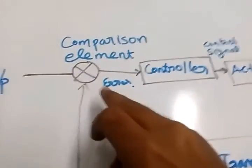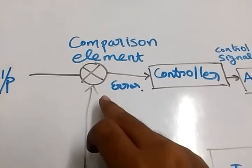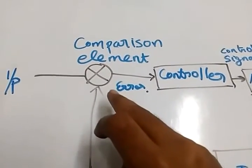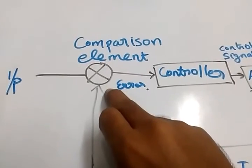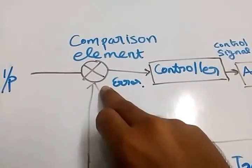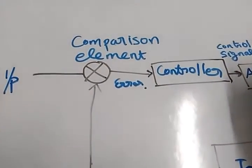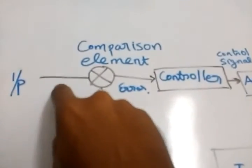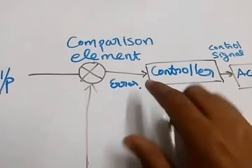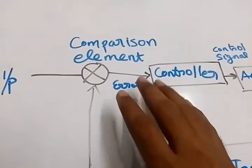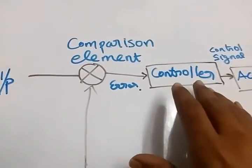So here the job is to do this comparison element. This comparison element finds the difference between the actual arm position and the required arm position given in the input. So now after comparison, this error signal is given to the controller.